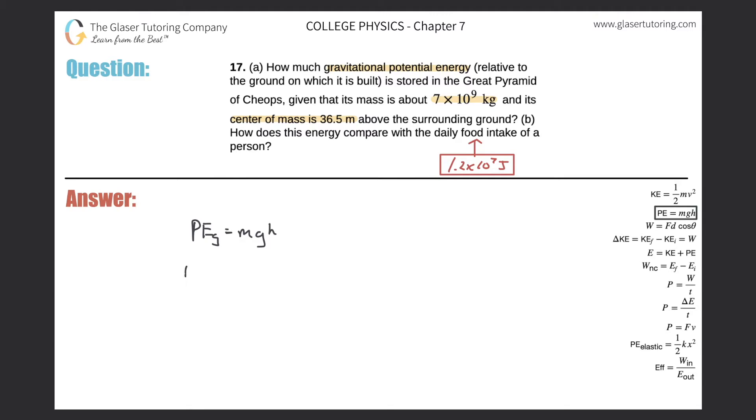So we can just plug in the numbers here. It's fairly straightforward. So the mass is going to be 7 times 10 to the 9. The value of G is 9.8, right? And the height here they told us was 36.5. So the gravitational potential energy is going to be 7 times 10 to the 9 times 9.8 times 36.5.